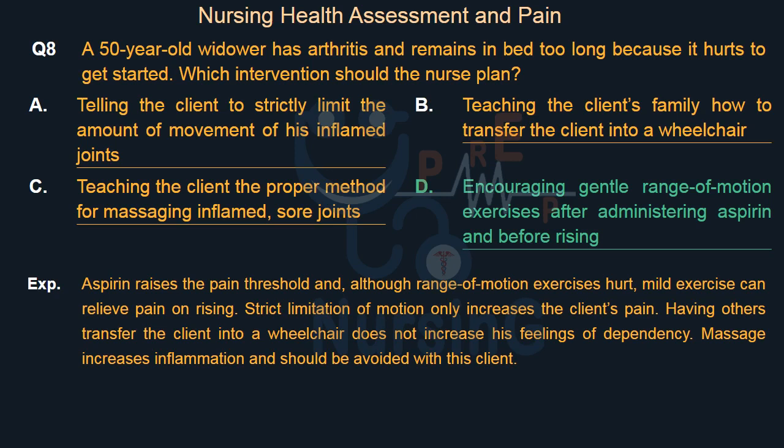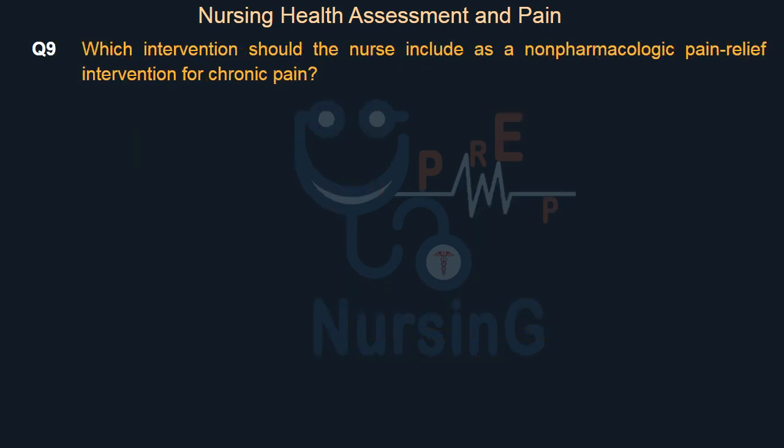Aspirin raises the pain threshold and, although range of motion exercises hurt, mild exercise can relieve pain on rising. Strict limitation of motion only increases the client's pain. Having others transfer the client into a wheelchair increases his feelings of dependency. Massage increases inflammation and should be avoided with this client.